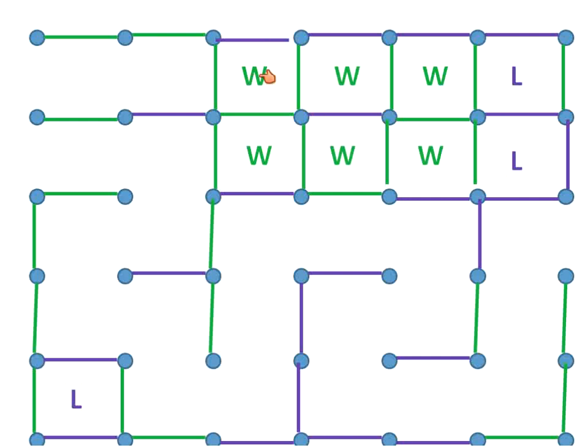Now at this point, again, player W, green, has an option. We can quickly fill this in and take those two points or do the smarter move and just go on the end.